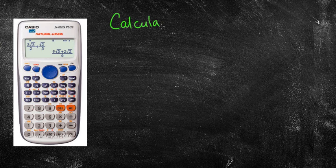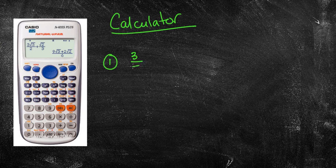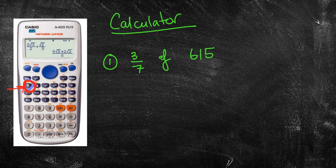So this is using the calculator. We will look at the question. First of all, we'll look at 3 sevenths of 615. We'll do that one. So first of all, do you know where your fraction button is on your calculator? Well, if you have a look down on that second key, that button there, it looks sort of like this. That is your normal fraction button, or an improper fraction, or whatever one you want to use.